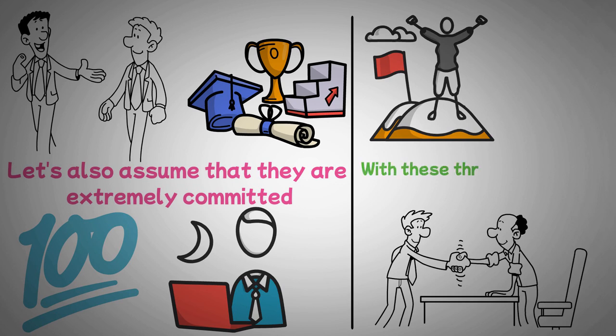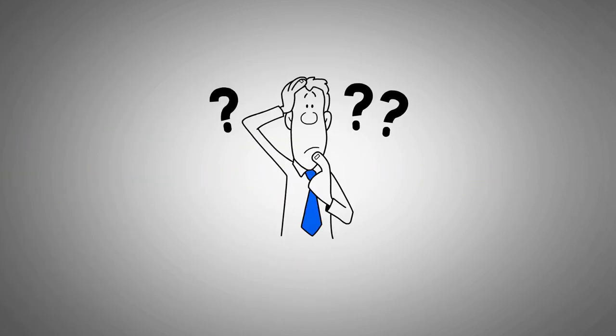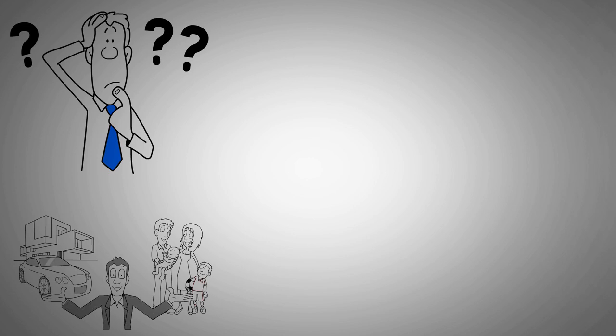Because of their exceptional intelligence, Tom and Peter were able to complete two degrees at Cambridge in just four years while maintaining perfect GPAs. Let's also assume that they are extremely committed to their careers and are willing to work 80 hours per week to achieve their goals. Let's also suppose that they will cooperate in doing business honestly. With these three components - intelligence, effort, and integrity - you have a strong recipe for success.